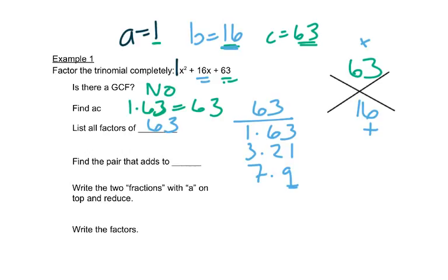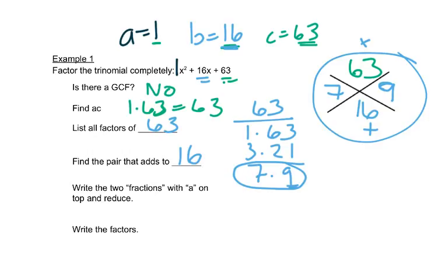So now we need to find a pair that adds to 16. So that's these numbers right here. We'll put those numbers once we've found them on the outsides of our x. So once we find this 7 and this 9, we're going to write fractions with a on top. So we have 1 over 7 and then 1 over 9. Now neither one of those can be reduced, so we're going to use those to write our factors.